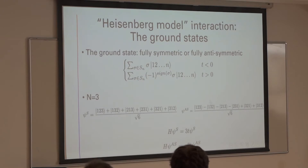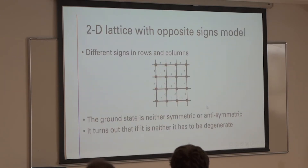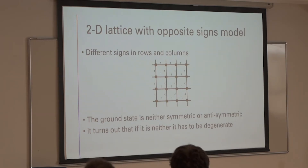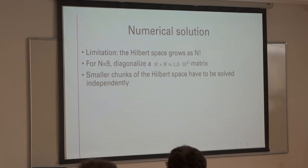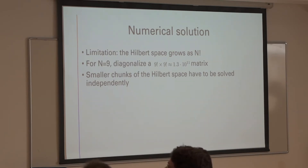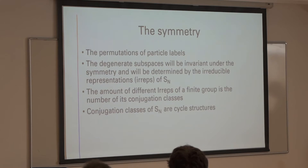Another interesting system to consider is a two-dimensional lattice with signs that are opposite in columns and rows. The ground state of this system wants to be symmetric in columns and anti-symmetric in rows — it's neither, and it turns out that if it's neither, the ground state has to be degenerate. To solve this problem numerically one has to diagonalize an N-factorial by N-factorial matrix, which becomes impossible very fast. So we have to diagonalize smaller chunks of the Hilbert space at a time independently.